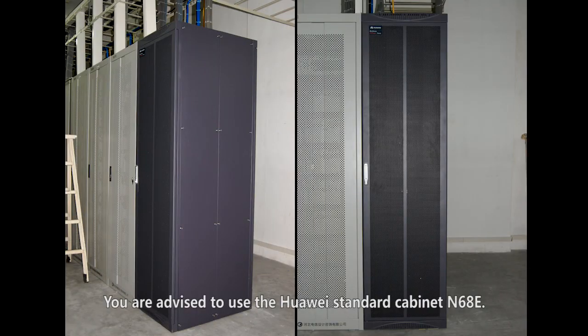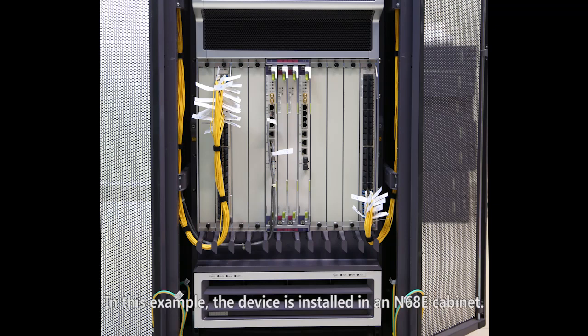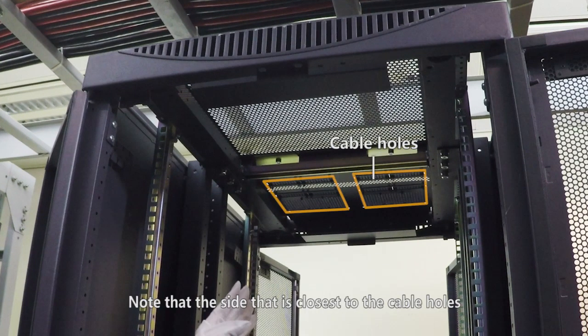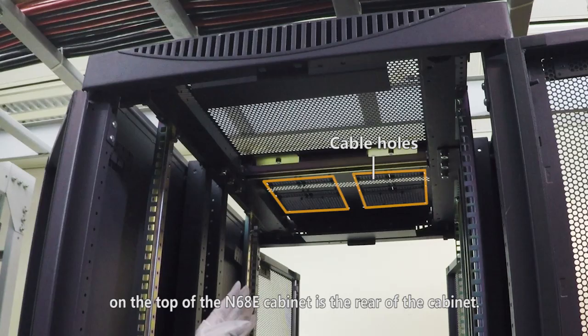You are advised to use the Huawei standard cabinet N68E. In this example, the device is installed in an N68E cabinet. Note that the side that is closest to the cable holes on the top of the N68E cabinet is the rear of the cabinet.